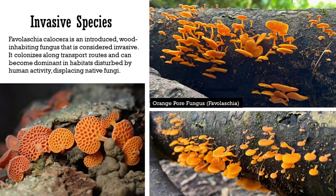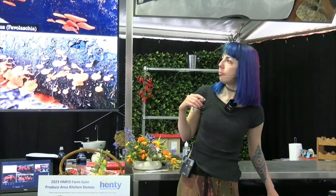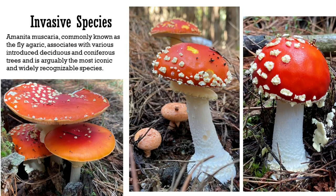Invasive species: we have a lot of invasive species but only two listed invasive fungi. Orange borer fungus, also called orange ping-pong bats, grows on wood and is transported by bushwalkers when spores get on their shoes and clothes and are carried to other bush tracks.